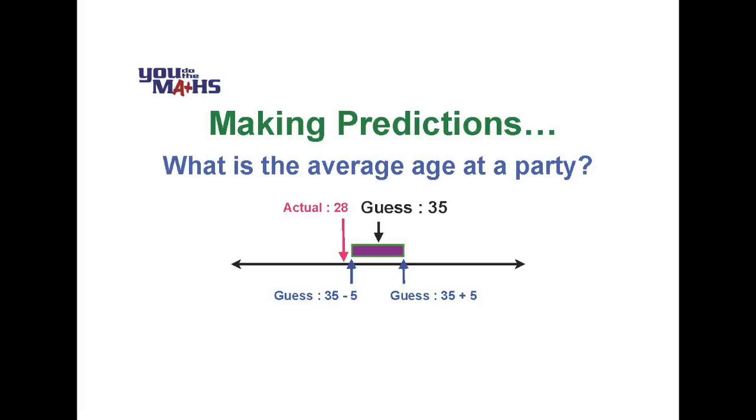We'd probably find that the percentage of times that the actual average was within those guesses would be smaller than if the error margin was 20 years in the original case. So the smaller the interval, the smaller the percentage of times that the actual answer, in this case 28, will be contained within the interval.